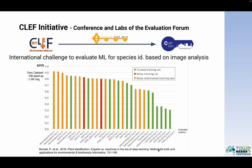In 2018, we were able to evaluate the impact of noisy data when used by deep learning methods for image-based plant species identification. Here, for example, shown in orange, you have techniques that were based on both EOL data and crawled web data. As we can see, most of them are much better than methods that were based on trusted data only.